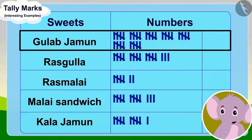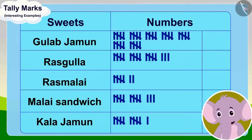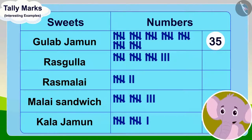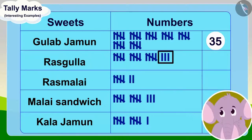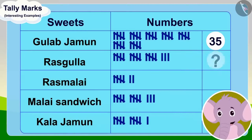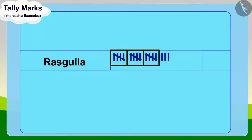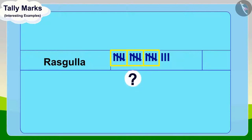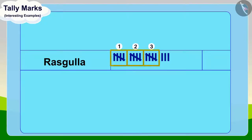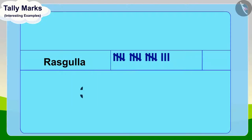Appu also found the number of Gulab Jamuns and wrote them in the table. Now, some tally marks are not in groups of five. Let's count the groups of five tally marks first — there are exactly three, which equals fifteen. Then we count the remaining tally marks — there are three left. Adding those three to fifteen gives us a total of eighteen.